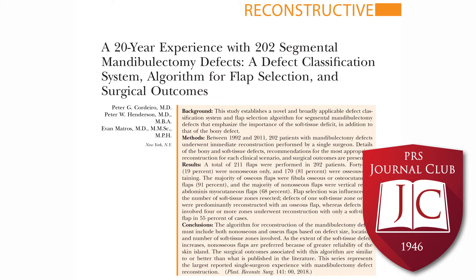I agree — this was a really impressive paper. The length of follow-up and number of patients speak for themselves. But as I was reading, I was thinking about how when we go into these surgeries, we don't always know exactly what our resection margins are going to be. Dr. Gosman, what is your personal experience with preparing patients for these surgeries and navigating all the different reconstructive plans based on what the defect looks like? How do we have that conversation with patients and their families ahead of time?